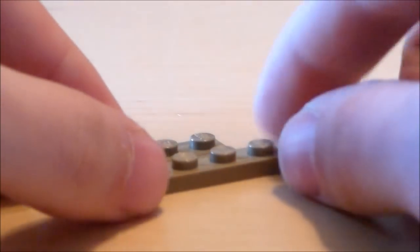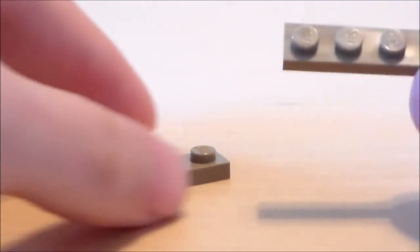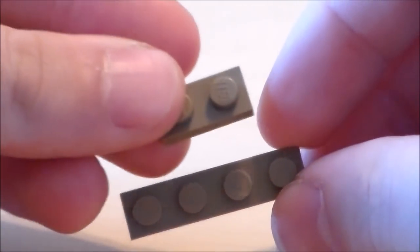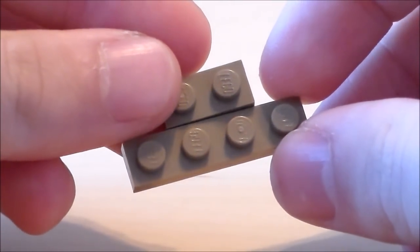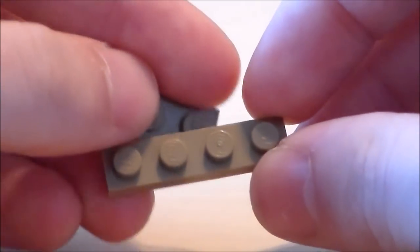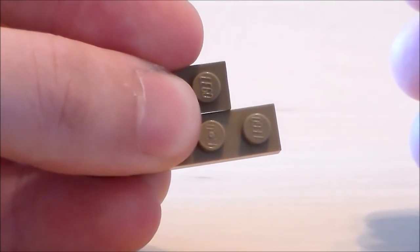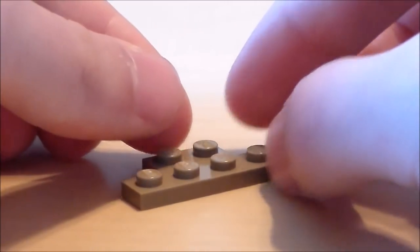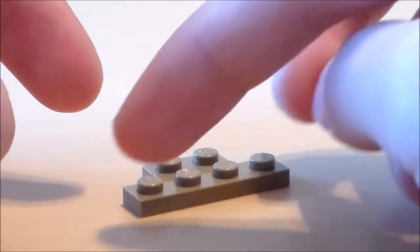To start off the LEGO Minecraft Turtle I'm going to get a few plates in the dark tan color. I'm going to start off with a 1x2 plate as well as a 1x4 plate and as long as you make up this similar shape you'll be good to go. You can also use the corner ones, so I'm going to lay them out like so, just two corner plates in that same shape.